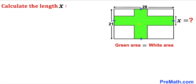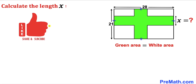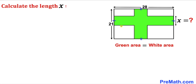Welcome to pre-math. In this video we have a rectangle whose dimensions are 21 and 28, as you can see in this diagram. The green area is equal to the white area, and we are going to calculate the length x. Keep in mind that the lengths of these green strips are the same. Please don't forget to give a thumbs up and subscribe.